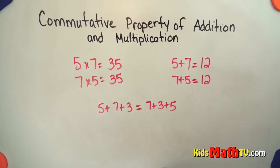7 plus 3 is 10 and if I add 10 to 5 I get 15. So let's see if that's the same over here. 7 plus 3 is 10. If I add that to 5 I still get 15.